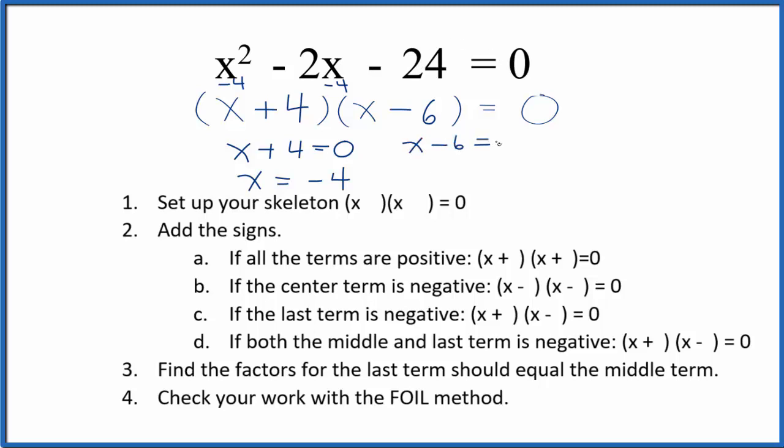if we said x minus 6 equals 0, so x equals a positive 6, if we put the 6 in for x here, did the math, all of this would also equal 0. So we know that these are the correct solutions.